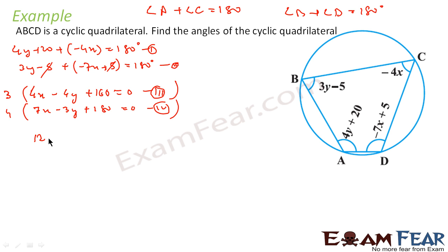So what I'll get here is 12x minus 12y plus 480 equals 0. This I'll get: 28x minus 12y plus 720 equals 0.